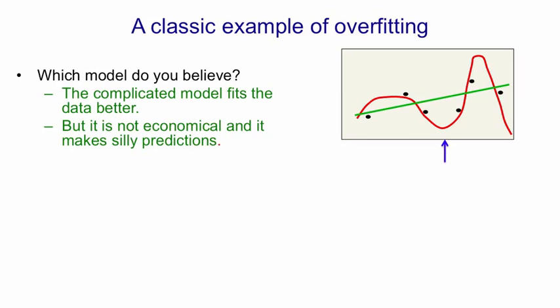So if you look at the blue arrow, if that's the input value and you're trying to predict the output value, the red curve will predict a value that's lower than any of the observed data points, which seems crazy. Whereas the green line will predict a sensible value.